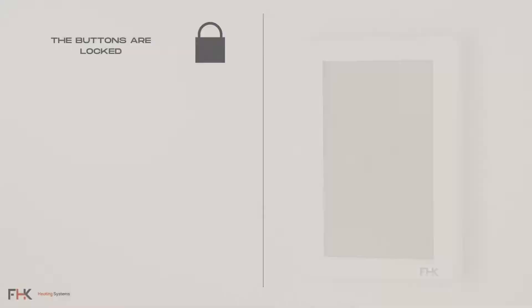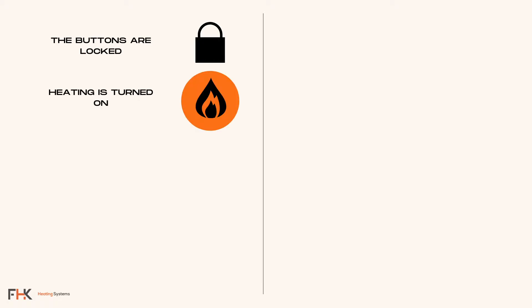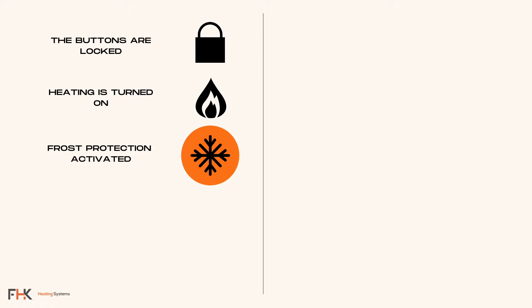First, let's run through what the symbols represent on the display screen. The padlock symbol means the thermostat keypad is locked. The flame symbol means the floor heating element is switched on. The frost symbol means that the unit's frost protection system has been activated.